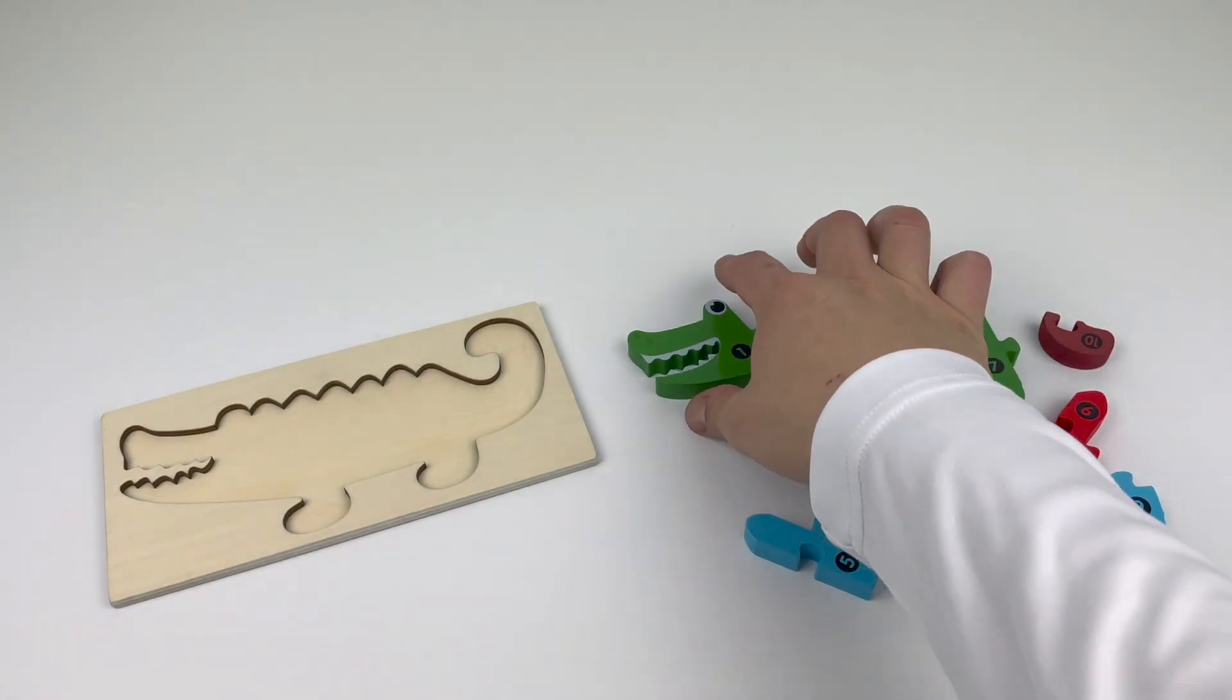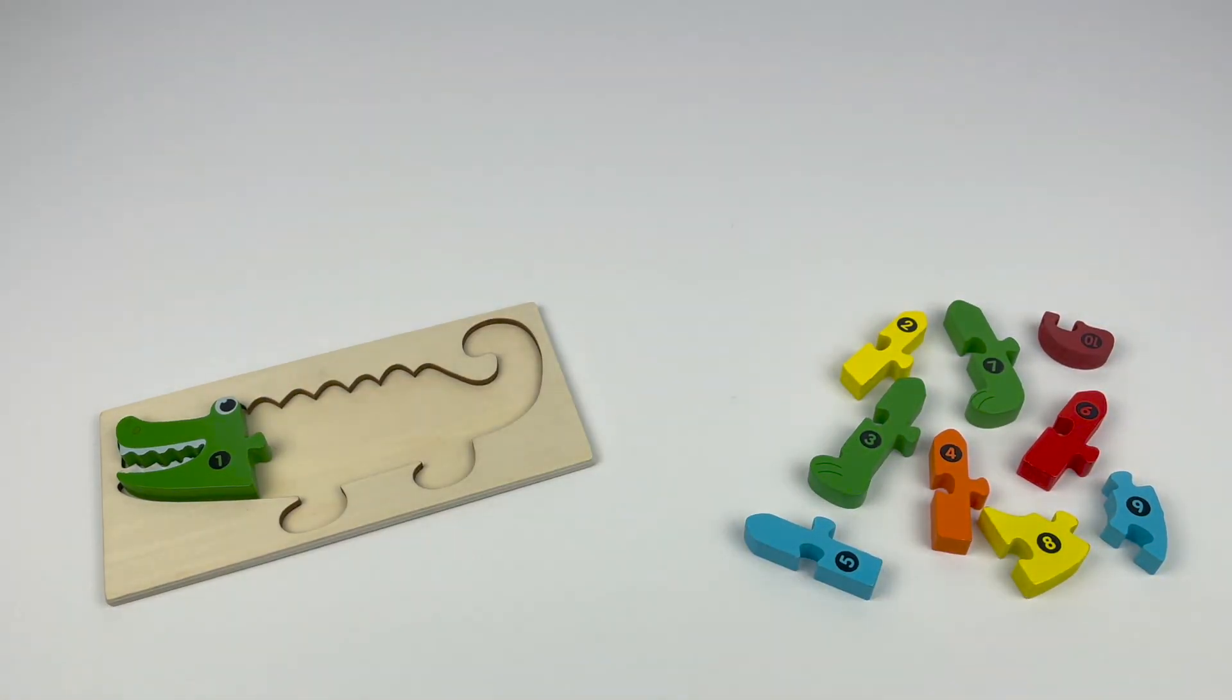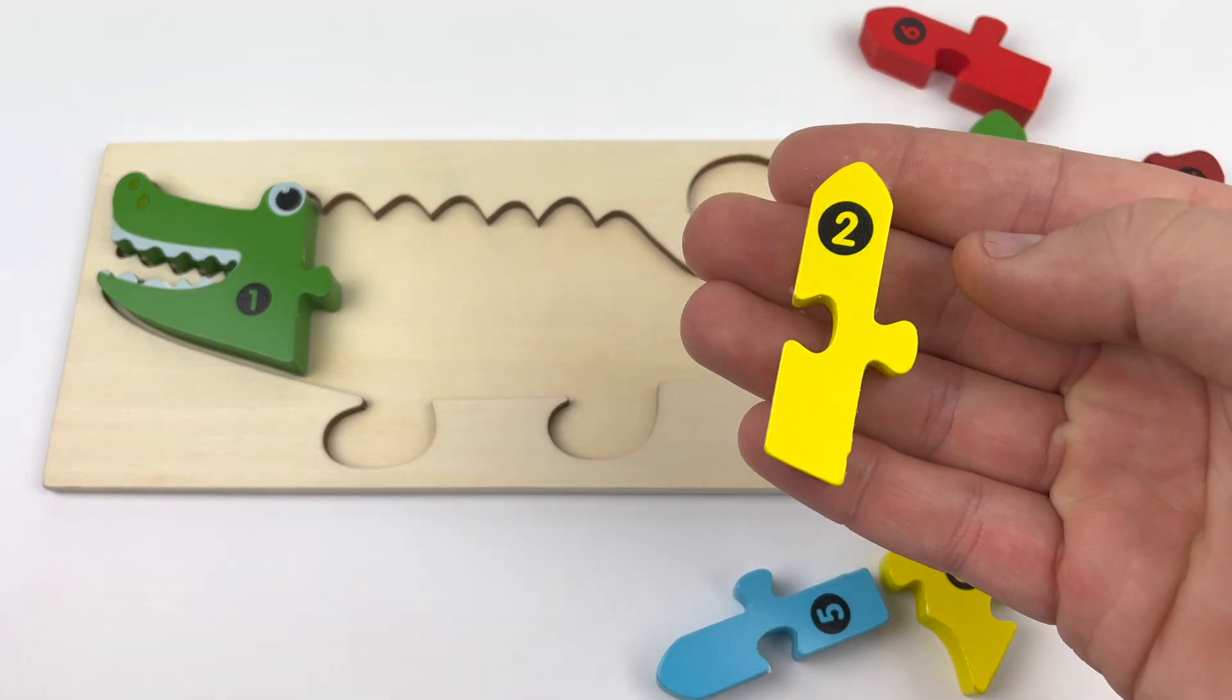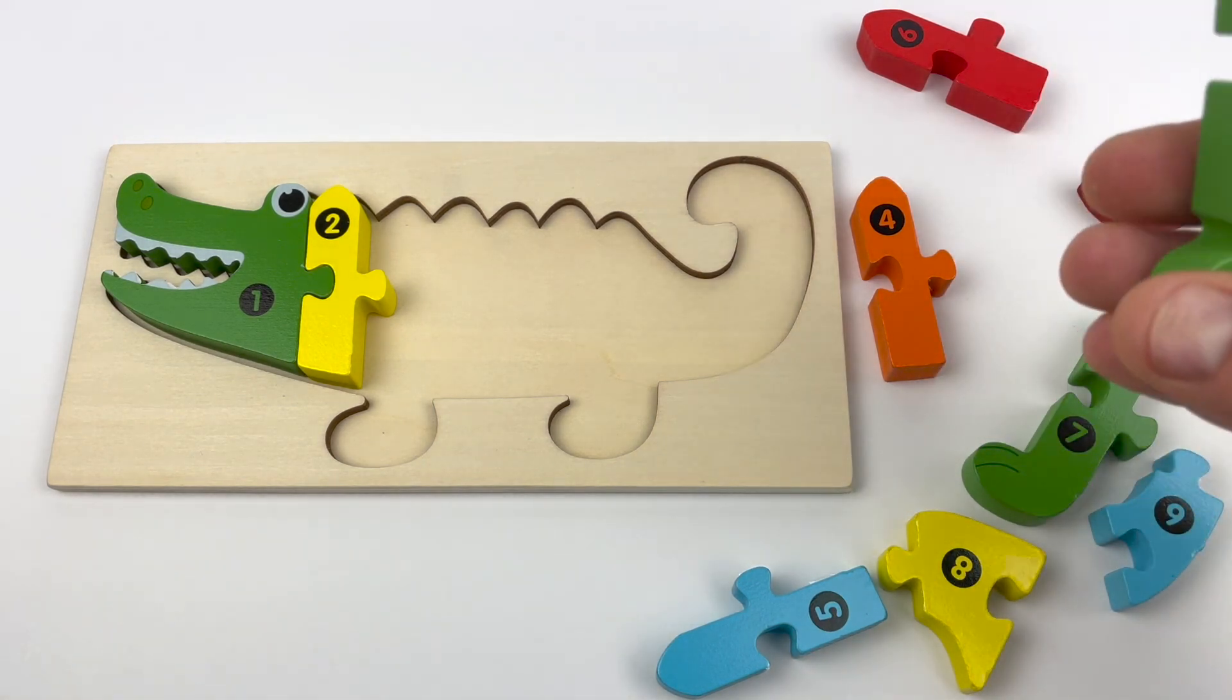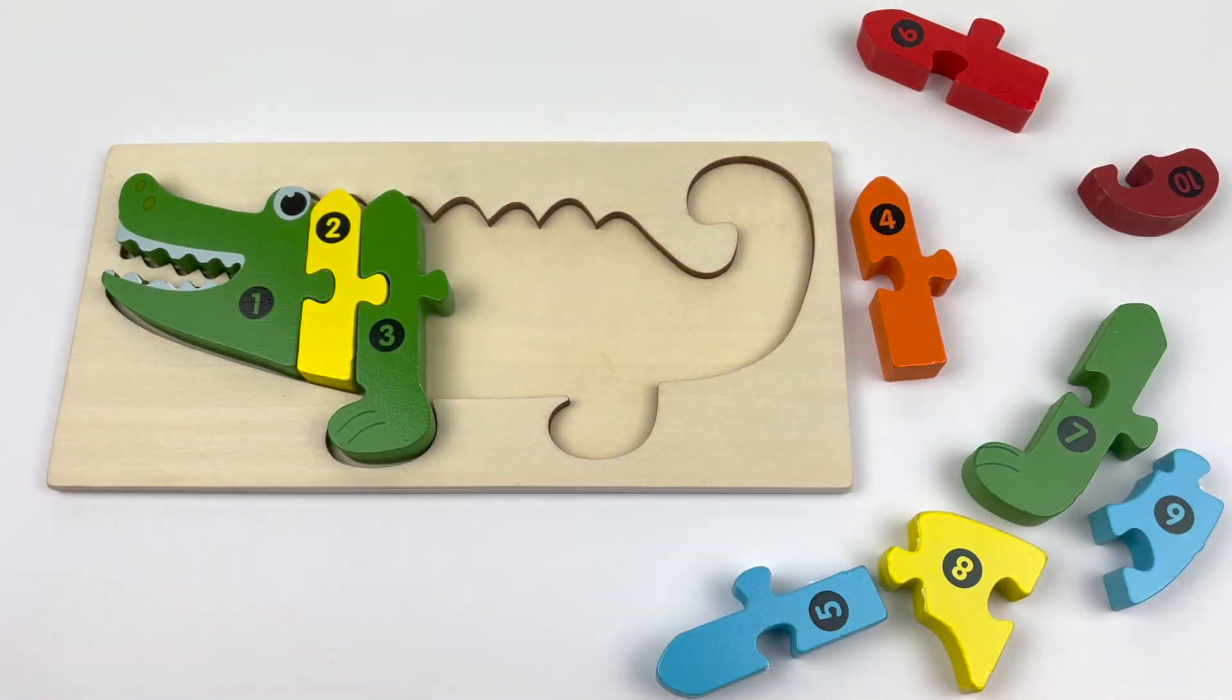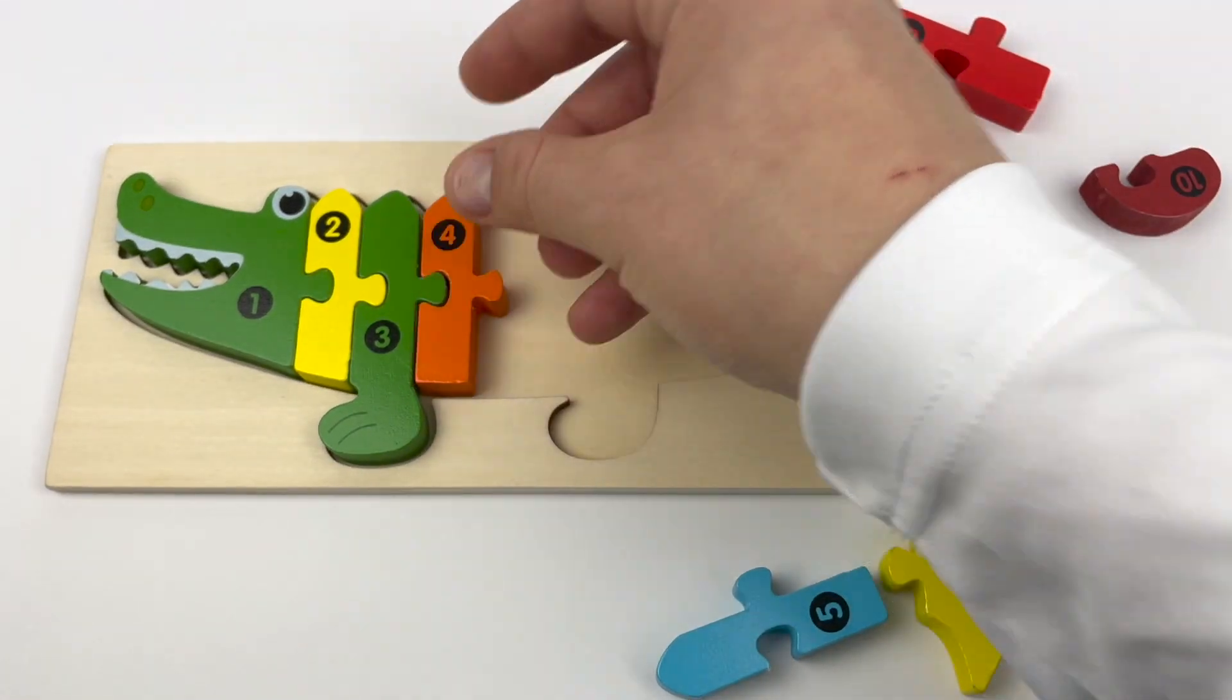And here's our last puzzle. Number one. Green. That looks like an alligator. Let's see. Green. Number two. Yellow. Number three. Green. Number four. Orange.